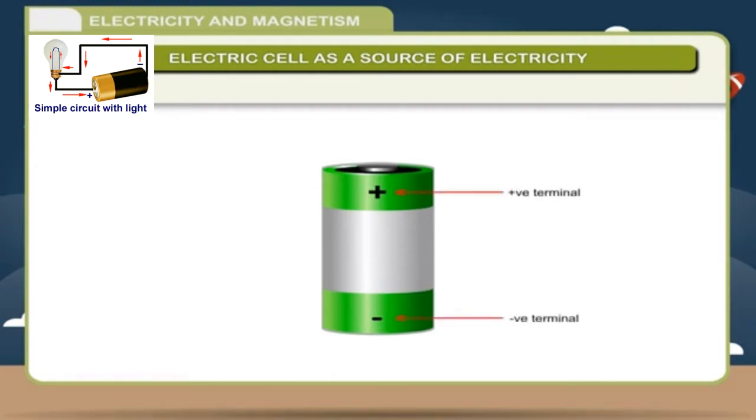A cell has two terminals. What are they? Two terminals. One is positive terminal. One is negative terminal.